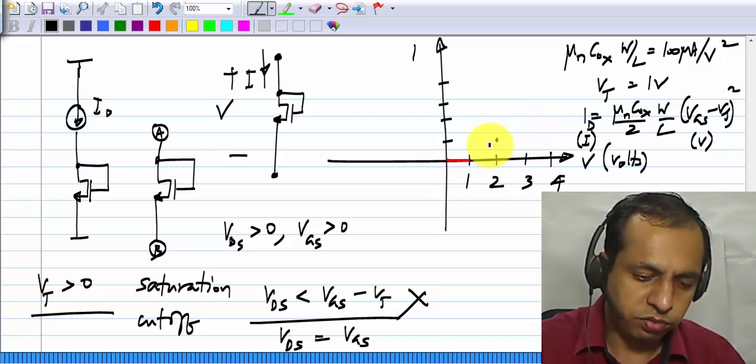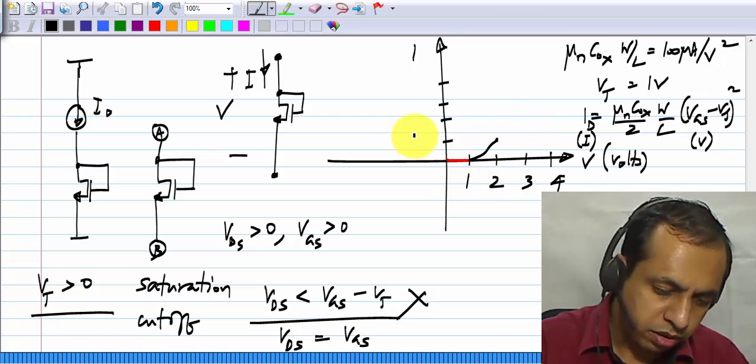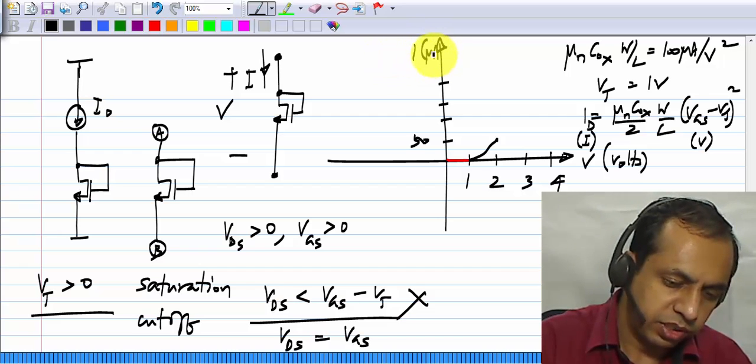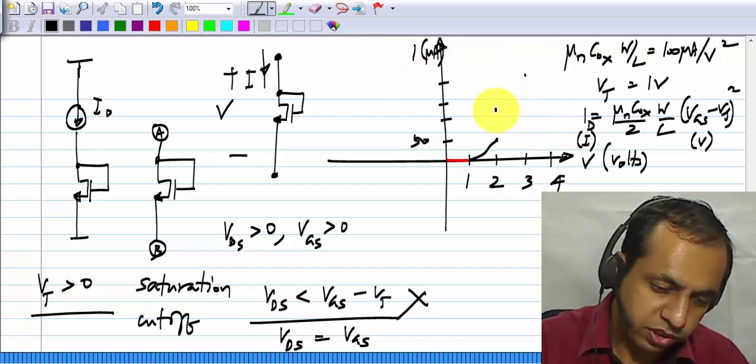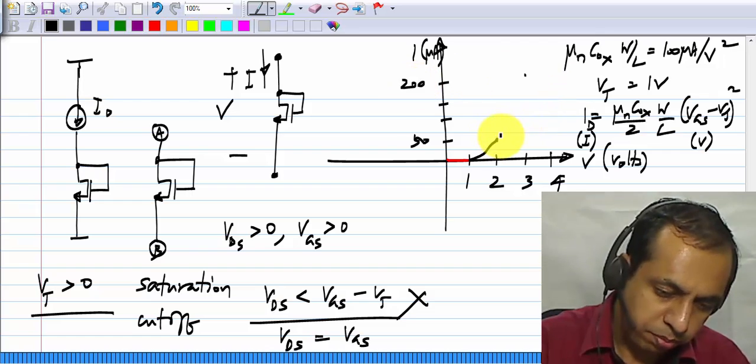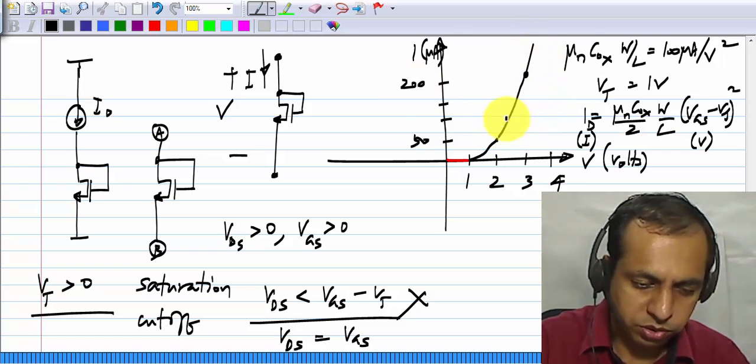At V g s of 2 volts, it will be 50 micro amperes. Let us say this is graduated in micro amperes. At 3 volts, it will be 200 micro amperes. At 4 volts, 450 micro amperes, and so on.